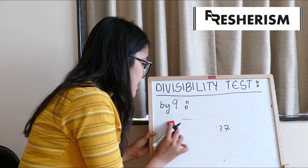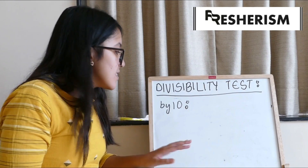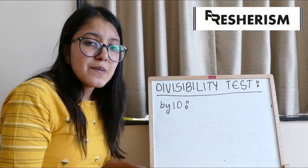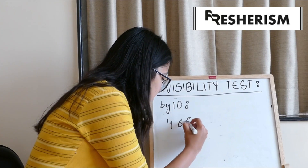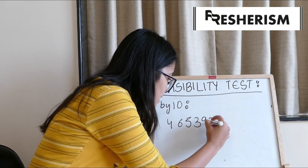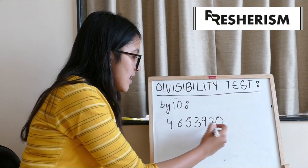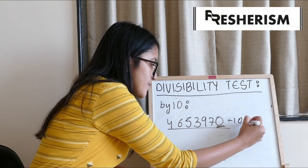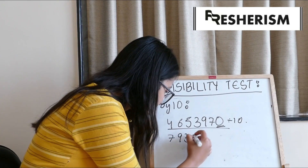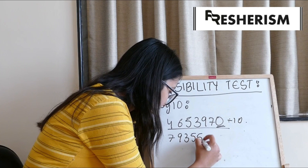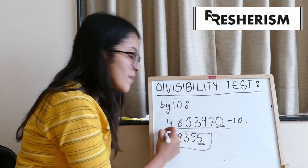Next, checking the divisibility test by the number 10. It is the easiest one. For any number to be divisible completely by 10, it just has to have a 0 at its units place. For example: 4,653,970 — such a lengthy number, but it has a 0 at its units place. Hence, this whole number is divisible by 10. Another example: 79,355 — at its units place it has a 5, not a 0. Hence, this number won't be completely divisible by 10.